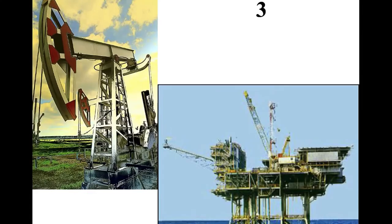Number three is just oil rigs. There are two different types of oil rigs on the slide here — we call them oil rigs on land on the left, and then offshore oil platforms on the right. We get a whole lot of oil from offshore sources.